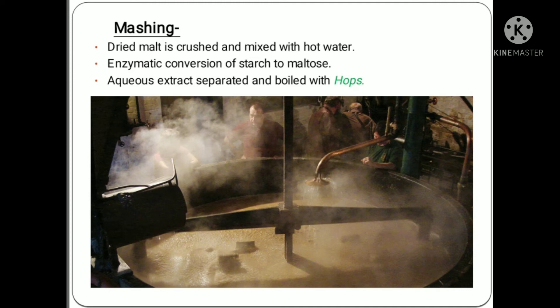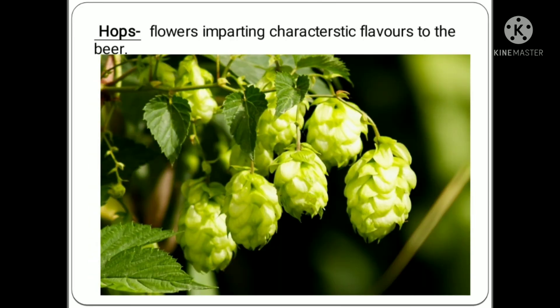The second step in beer production is mashing. The dried malt is crushed and mixed with hot water. Most of the enzymatic conversion of starch to maltose by amylase takes place during mashing, and it takes about 2 hours. The aqueous extract is separated from insoluble materials and husks and is then boiled with hops, which impart a characteristic flavour to the beer. Hops are the flowers or cones of a plant called Humulus lupulus. Hops help to keep beer fresher for longer, help the beer retain its head of foam — a key component of a beer's aroma and flavour — and of course add hoppy aroma, flavour, and bitterness.